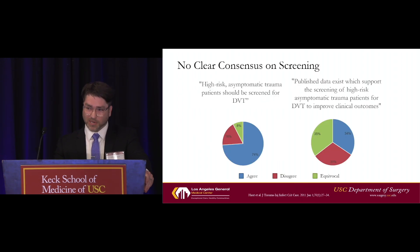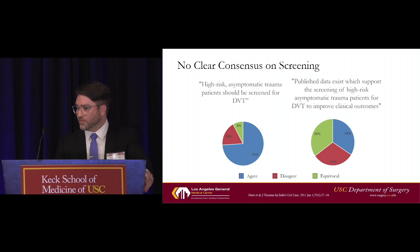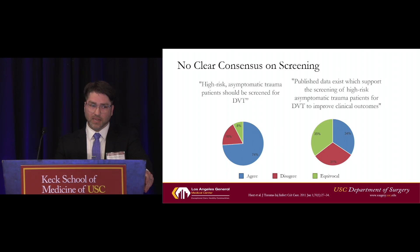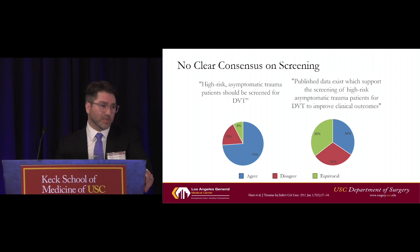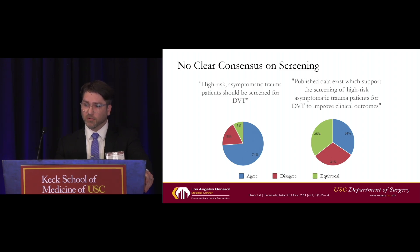There's not really ever been a clear consensus on this. This is from a 2011 study, again by Elliott Haut and a number of other people, where they surveyed both trauma centers and individual trauma surgeons from AAST and EAST. From roughly 300 trauma attendings, about 75% agreed that high-risk asymptomatic trauma patients should be screened for DVT, but only one third of them agreed that published data actually existed to support the opinion they held. I'm not sure that the needle has moved too much on this in the last 10 years, although certainly we're making a little bit of progress in the high-risk groups.